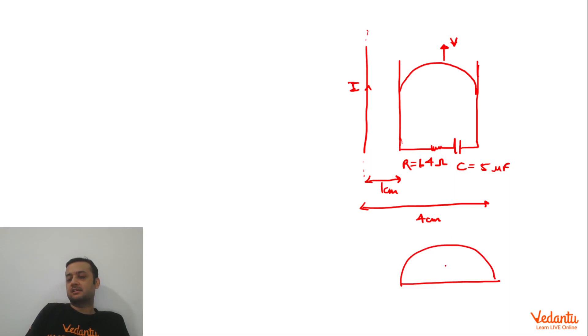Is semi-circle mein flux change nahi ho raha hai. Because the total flux in this semi-circle you can say is constant. The flux will be due to the magnetic field of this long wire. So total flux will be constant. And EMF's polarity will be like this.